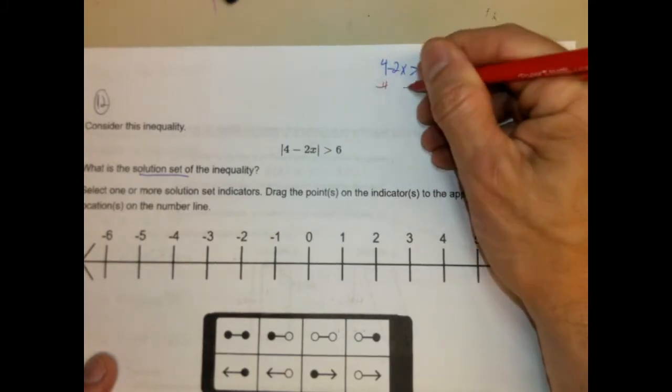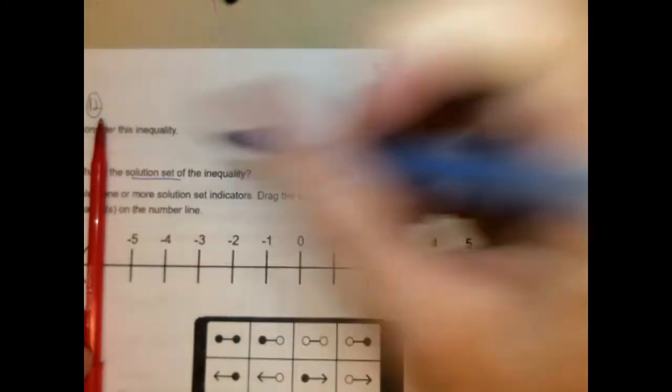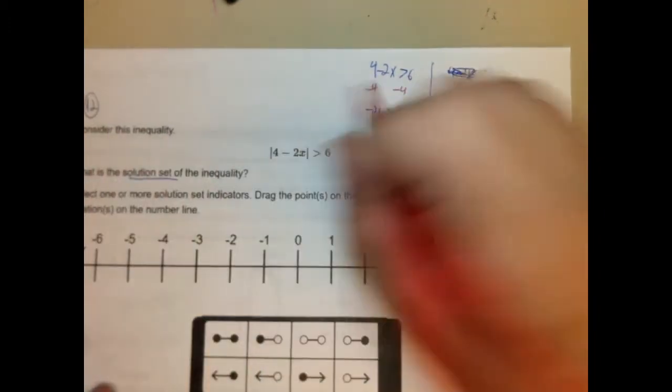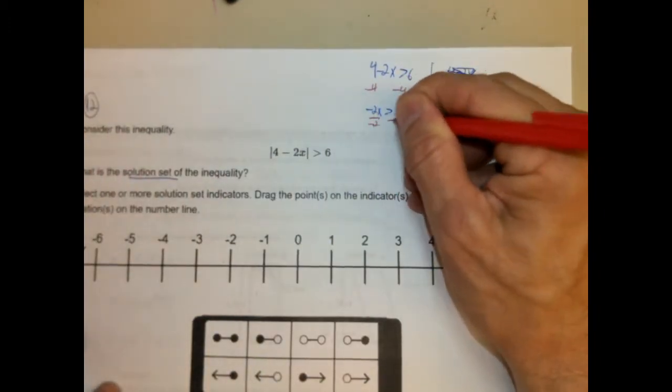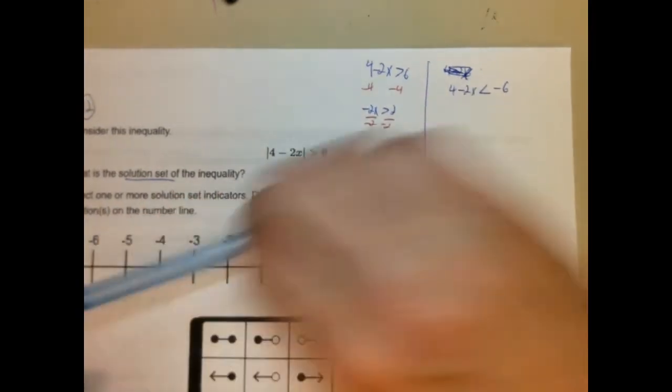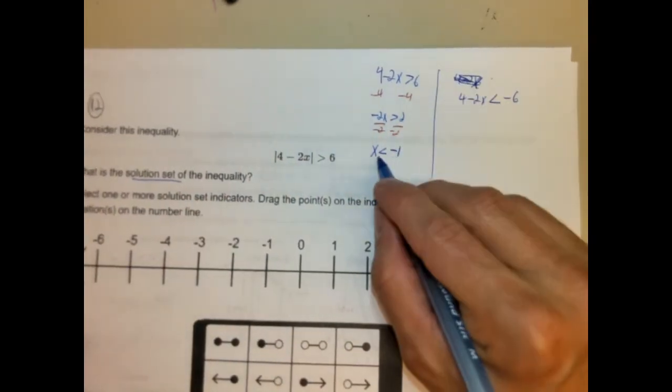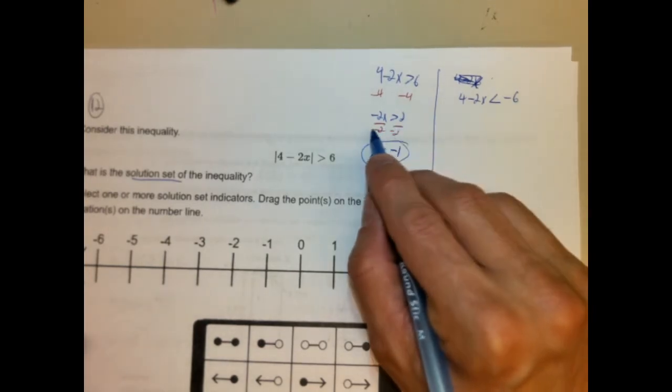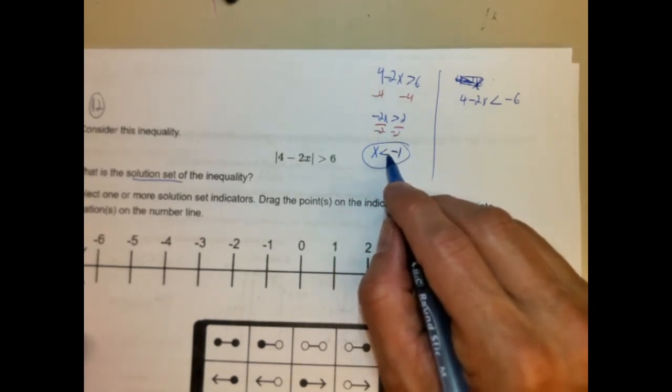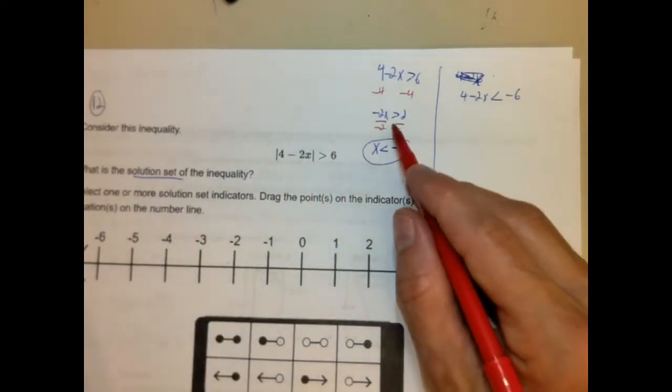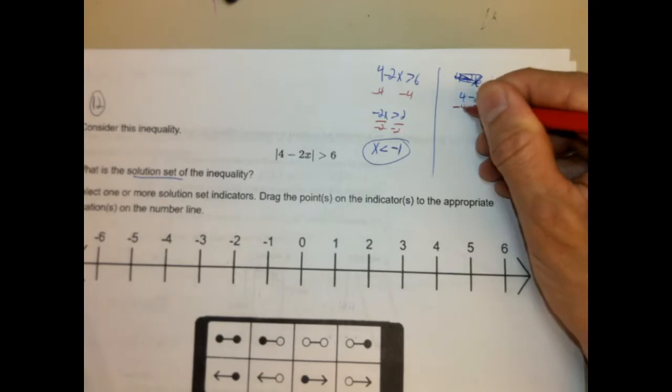So let's go ahead and solve this. We're going to subtract 4 from both sides and we're going to get negative 2x is greater than 2. We're going to divide by negative 2, and we're going to get x is less than negative 1. You'll notice I changed the direction of the inequality symbol. That's because I divided both sides by a negative. You have to remember to reverse the direction of the inequality symbol when you do that. They're kind of banking on that students are not going to remember how to do that.